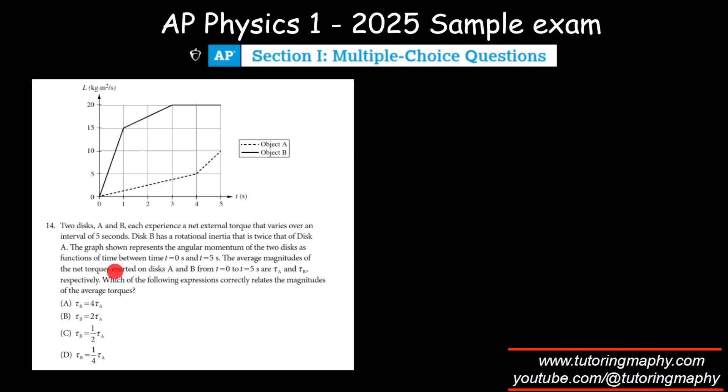as functions of time between zero and five seconds. The average magnitude of net torque exerted on discs A and B from 0 to 5 seconds are τ₁ and τ₂. Which of the following expressions correctly relates the magnitudes? So we need to basically find the ratio or the relationship between the two torques.